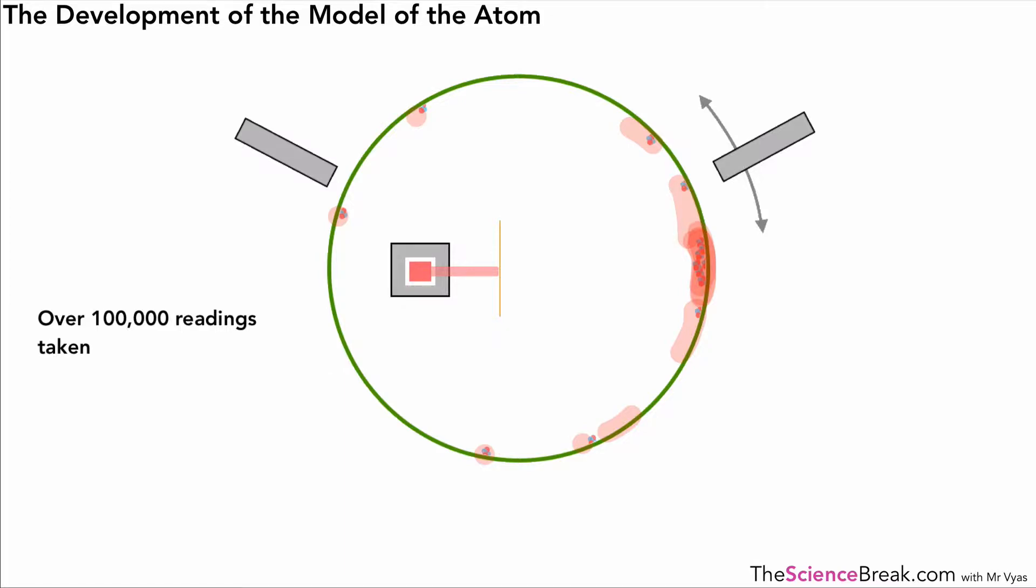This was a very big surprise because at the time the accepted model was the plum pudding model of the atom. That model said that the atoms were solid spheres, and if they were solid spheres it was expected that the alpha particles would not go straight through to the other side. They certainly weren't expecting some of them to bounce straight back again.